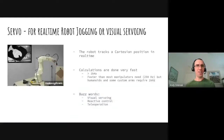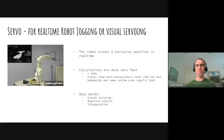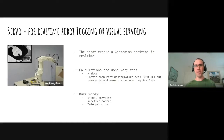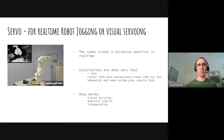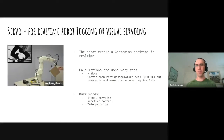We're going to talk about MoveIt Servo today, which is the real-time component of MoveIt. It's good for real-time robot jogging. An example of that is visual servoing - a person moves some kind of image to be tracked, and the robot is tracking it in real-time.